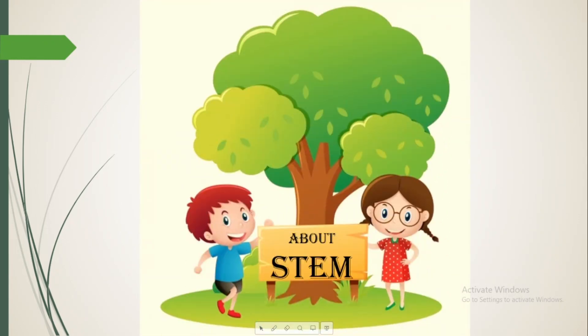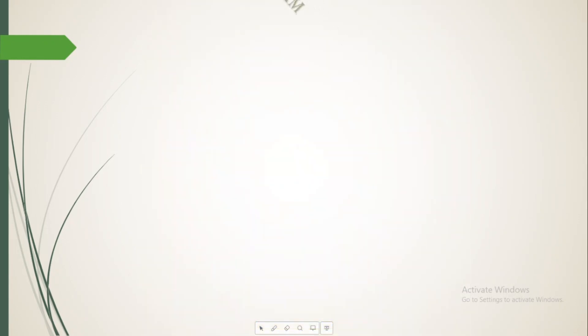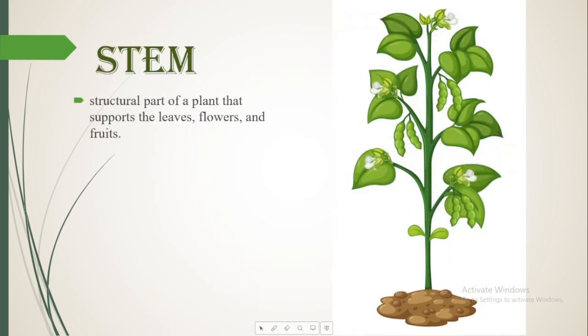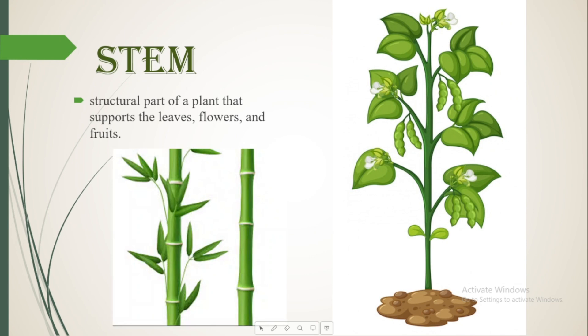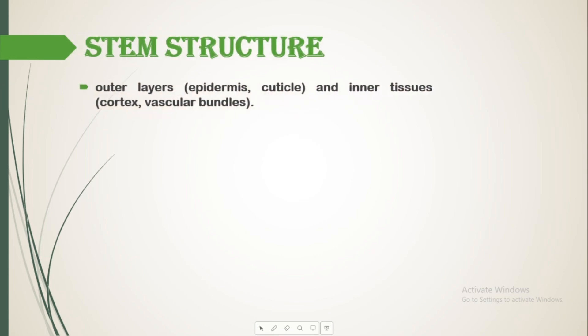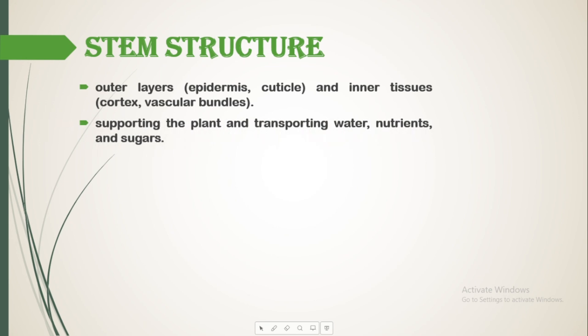Next, let's study about the stem. Stem is the structural part of the plant that supports the leaves, flowers and fruits. It has different layers like the outer layers and the inner tissues. In the outer layers it has epidermis and cuticle, and in the inner tissues we have the cortex and vascular bundles. The main function of the stem is supporting the plant and transporting water, nutrients and sugar.